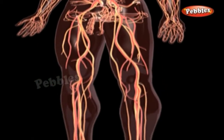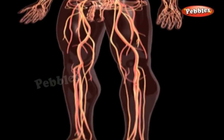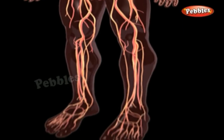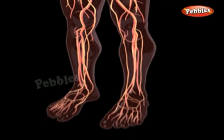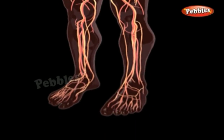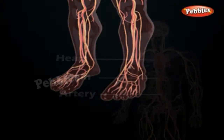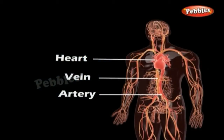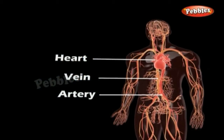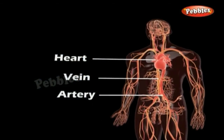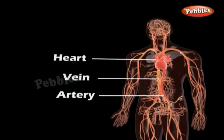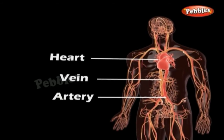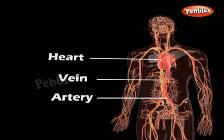Blood is a liquid which has cells of various kinds suspended in it. The fluid part of the blood is called plasma. One type of cell is the red blood cell, which contains a red pigment called hemoglobin.